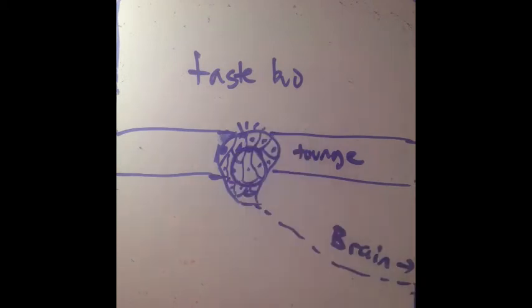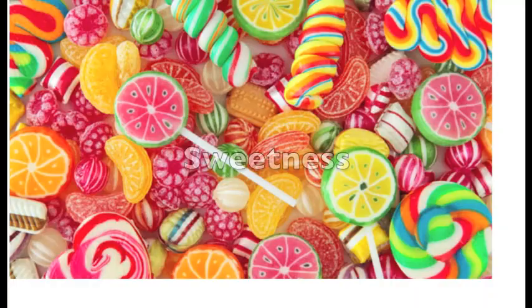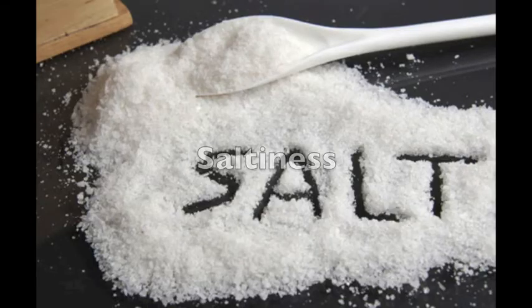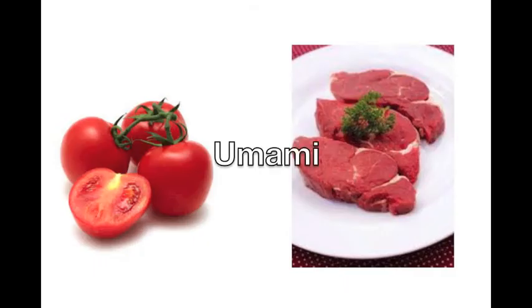Taste can be categorized into a combination of five known different basic tastes: sweetness, sourness, saltiness, bitterness, and umami. Most of us have heard of most of these tastes except for umami. It's just a word for savoriness, like in tomatoes or also in red meat.